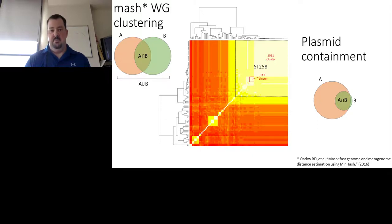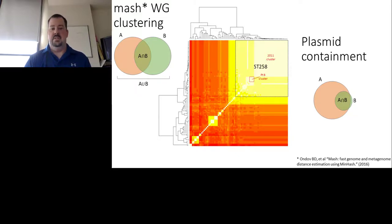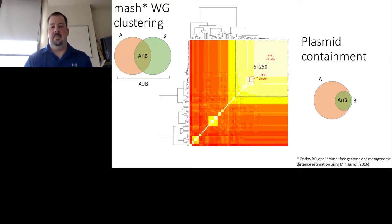The heat map shows a selection of Klebsiella pneumoniae genomes we have sequenced. Whiter colors indicate more similar organisms; redder indicates more different. You can see clear clustering. The box in the upper corner is all ST258s, and within that, the 2011 cluster organisms cluster together because they're essentially identical. This method is quite accurate for very closely related genomes, though it tails off as they become more distant.